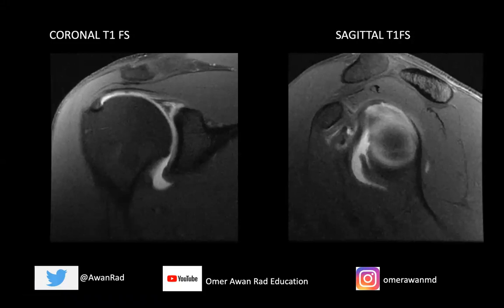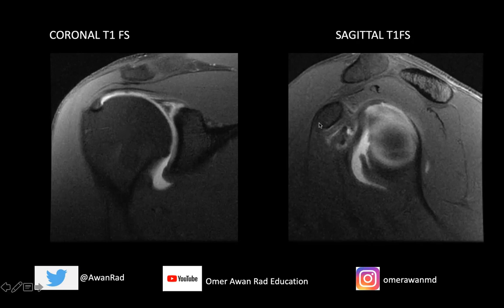Hello everyone and welcome to week 15 of MSK Unknown Case Series. The two images here are a coronal T1 fat sat weighted image of the shoulder and a sagittal T1 fat sat weighted image of the shoulder. This is an MR arthrogram — we've injected fluoroscopic gadolinium contrast within the joint space under fluoroscopy and then had an MRI examination. This bright signal within the joint space is done to distend the glenohumeral joint so we can see the intra-articular structures.